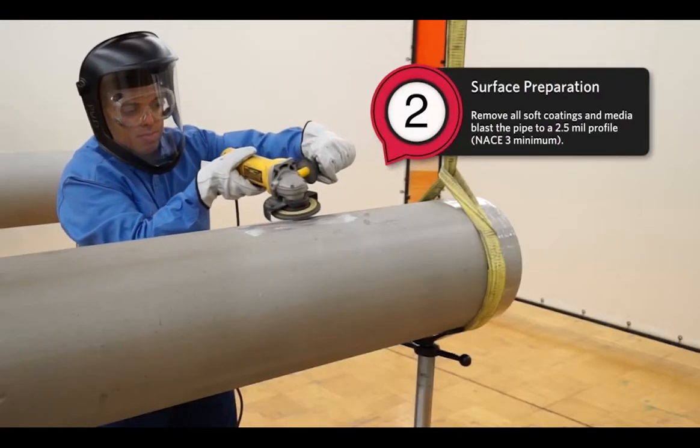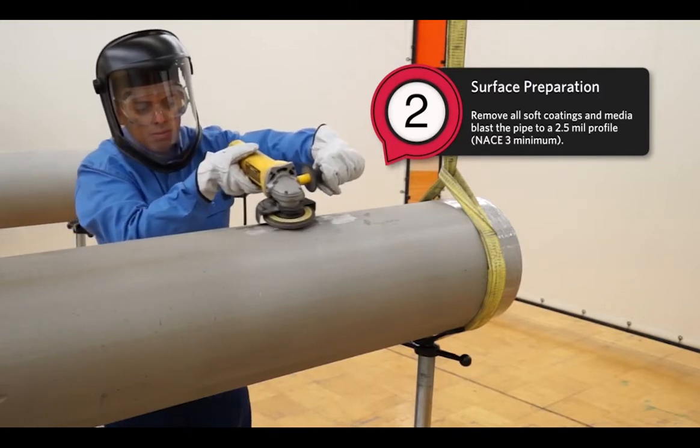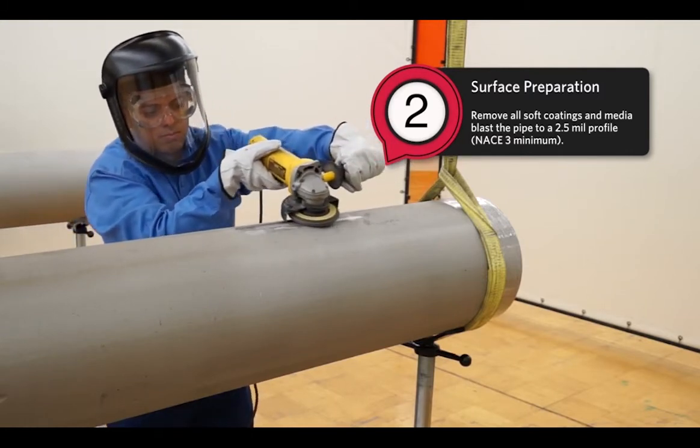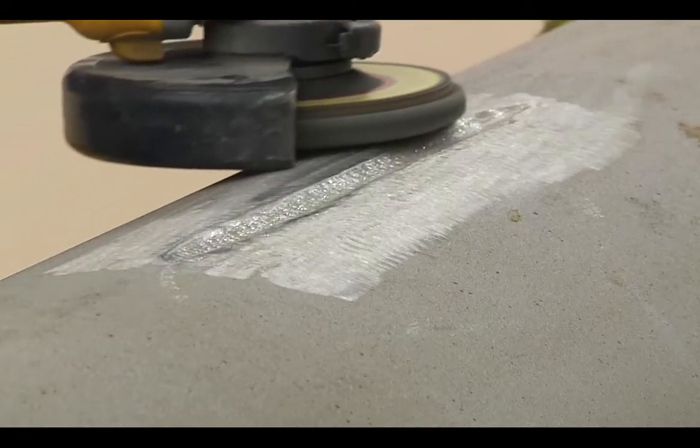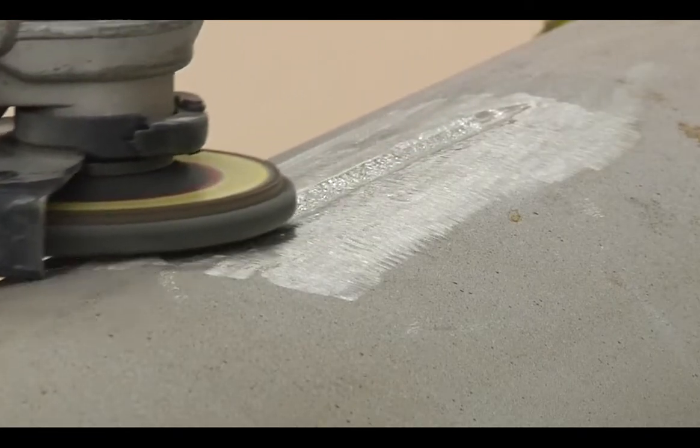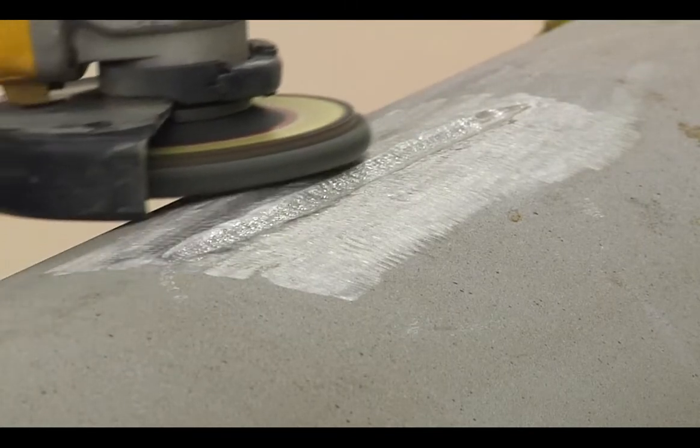Surface Preparation: Remove all soft coatings and media blast the pipe to a 2.5 mm profile, NACE 3 minimum. If media blasting is unavailable, mechanical preparation may be used. Verify with a pipe wrap representative first.